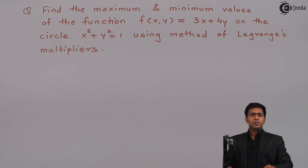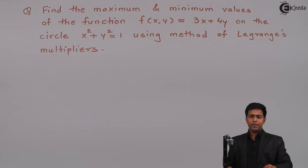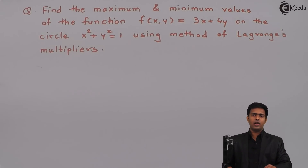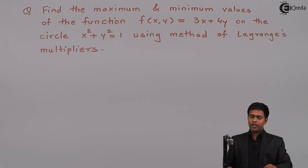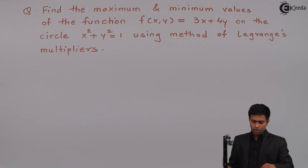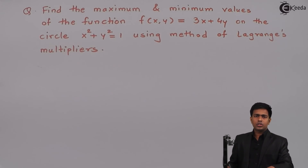Whenever we want to find the values of maxima and minima using Lagrange's multiplier, we always find out the stationary values using Lagrange's multiplier, and for those stationary values we find the minima and maxima. We will follow two steps to find out the stationary values.